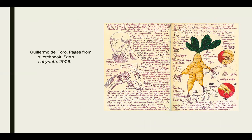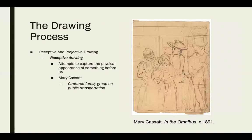Another example is Guillermo del Toro, the famous director who directed the stop-animation Pinocchio and Pan's Labyrinth. He keeps sketchbooks for each movie he directs to jot down ideas as he goes. There's obviously more writing in his sketchbook compared to da Vinci's, but he has character development sketches and is able to visually communicate his ideas to those producing the movies.